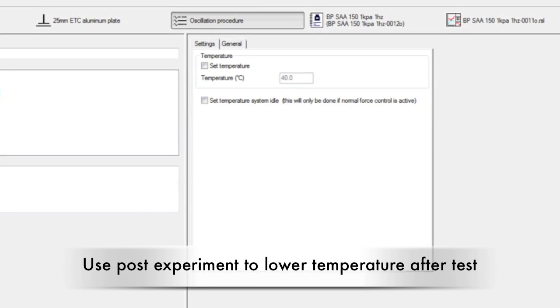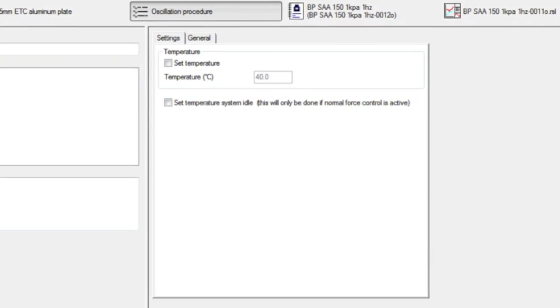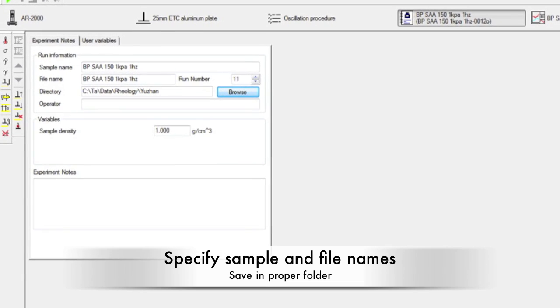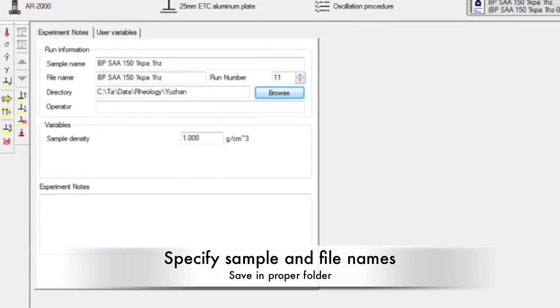A post-experiment step can be used to lower the temperature after the test. Under the file tab, enter in sample and file names. Make sure to save in the proper folder.